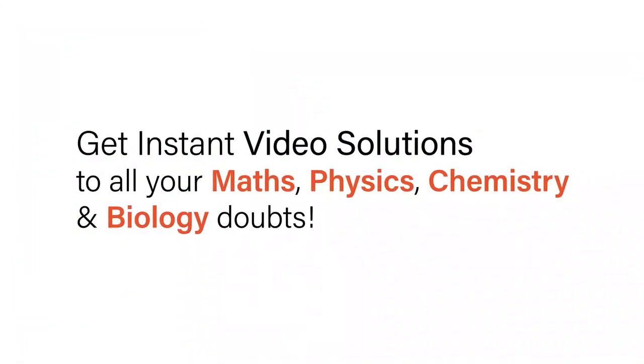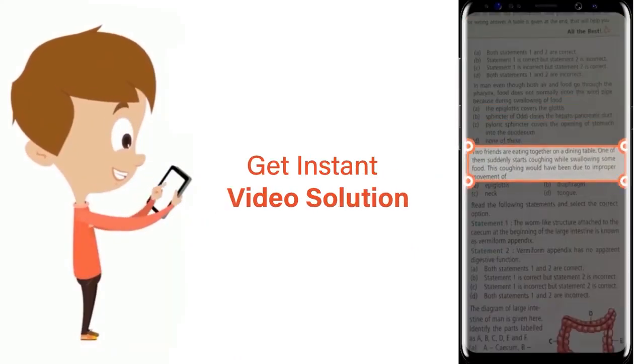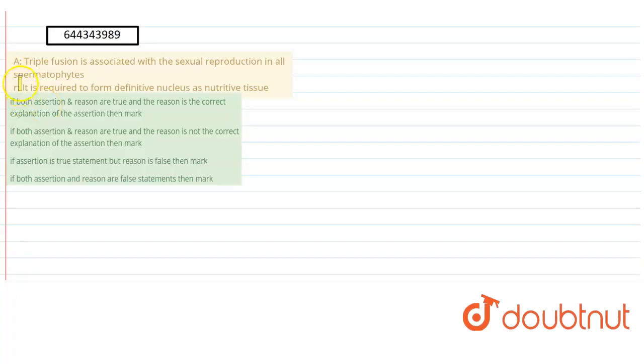With Doubtnut, get instant video solutions to all your math, physics, chemistry, and biology doubts. Just click the image of the question, crop the question, and get instant video solution. Download Doubtnut app today. The question that we have is of assertion and reason type, and we need to tell if both the statements are correct and if the reason is the correct justification for the given assertion.